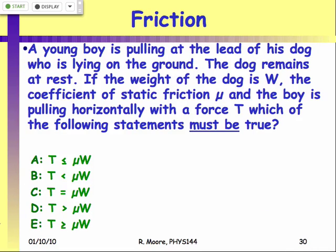We'll start with a question. We've got a young boy pulling the lead of his dog who is lying on the ground. The dog remains at rest, so if the weight of the dog is W, the coefficient of static friction is mu between the dog and the ground, and the boy is pulling horizontally on the lead with a force T, which of the following statements must be true? The tension is less than or equal to mu times W, tension is less than mu W, equals mu W, greater than, or greater than or equal to.